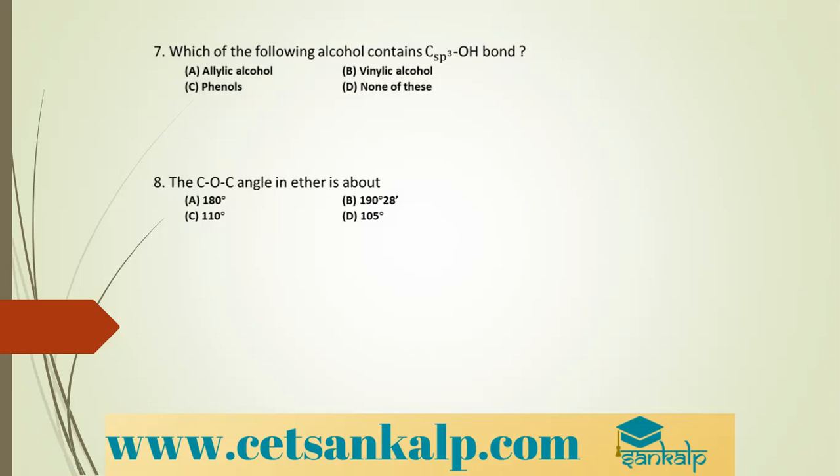Which compound reacts with CH3MgBr to give a tertiary alcohol? Tertiary alcohols are formed by treating Grignard reagent with ketones or with excess of an ester other than formate (since formate gives secondary alcohol). The acetate ester is the correct option here.